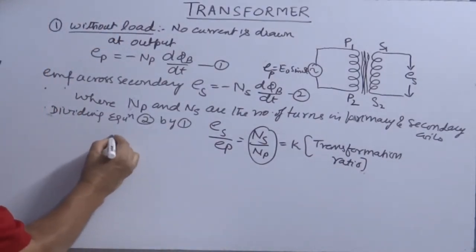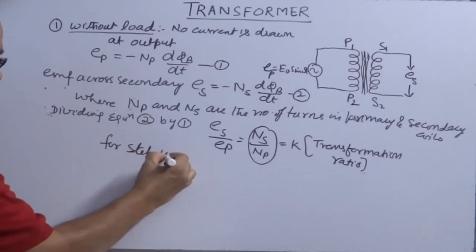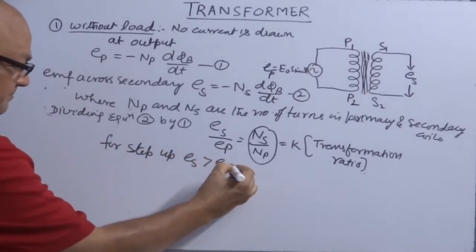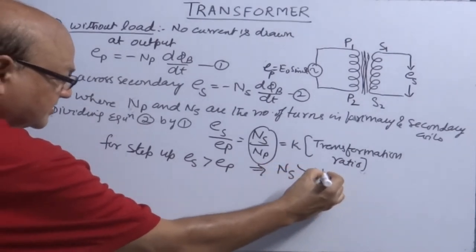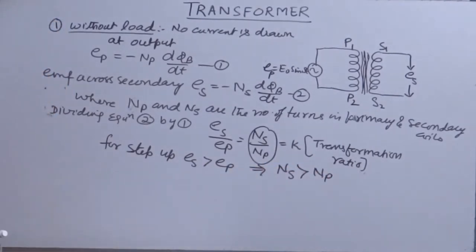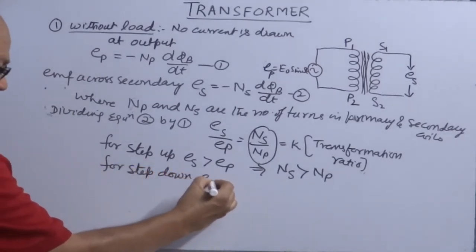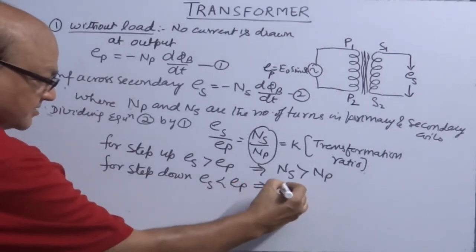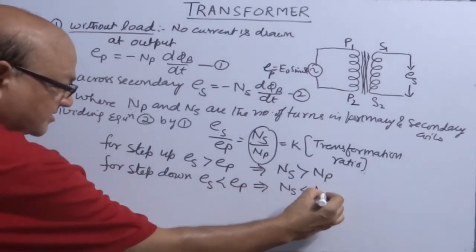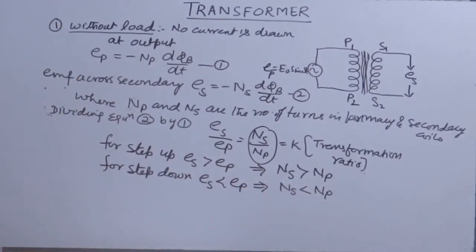So for step up, ES is greater than EP. This implies NS must be greater than NP. Number of turns in secondary must be greater than number of turns in primary. For step down, ES is less than EP. That means NS should be less than NP.